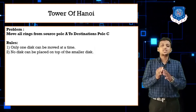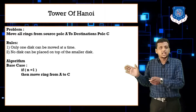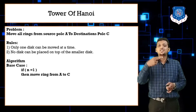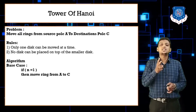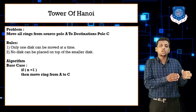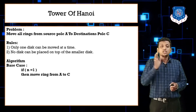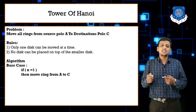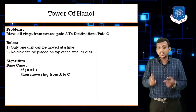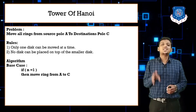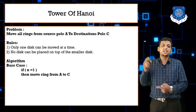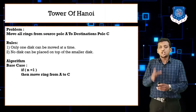This is a recursive algorithm. Every recursion function has two cases: a base case, where the algorithm stops, and a recursive case. For example, in a factorial program, if n equals one, return one — that is the base case. The recursive case is return n times factorial of n minus one. Similarly, we need to focus on the base case and recursive case for Tower of Hanoi.